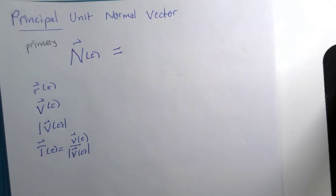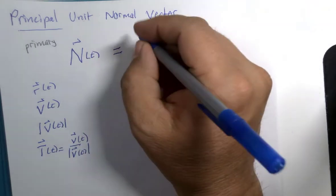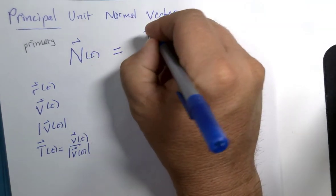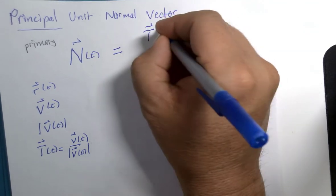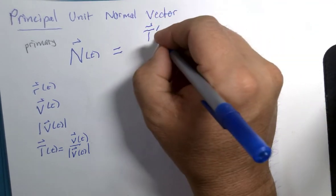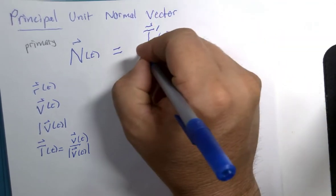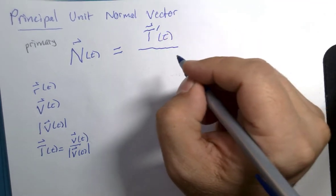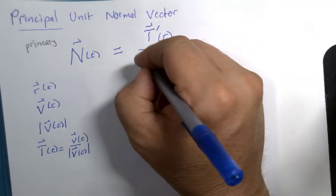So this is the definition or the formula for the principal unit normal vector. It is the derivative of the unit tangent vector divided by, to make it a unit vector, its magnitude.